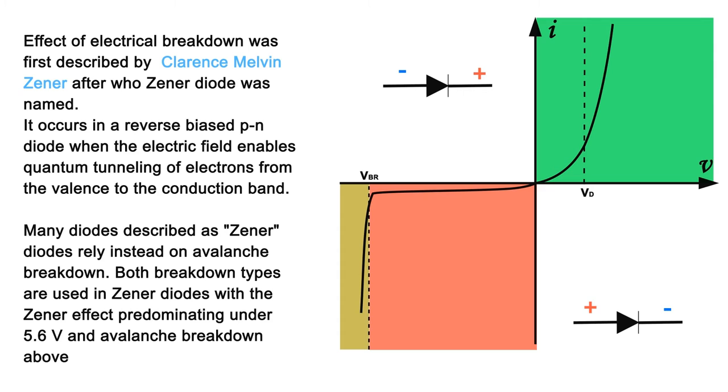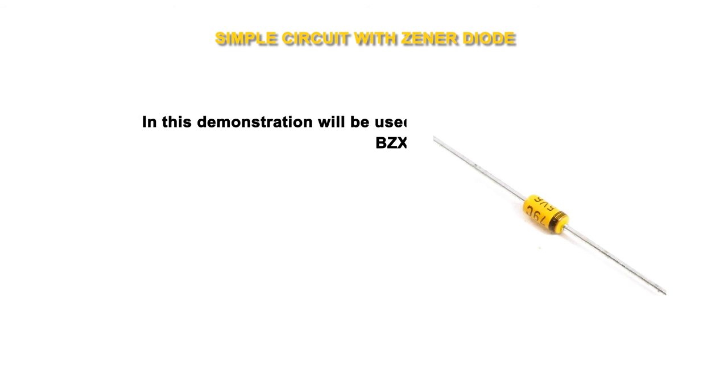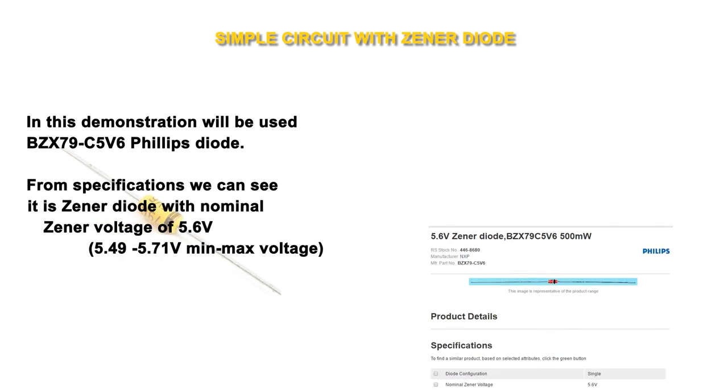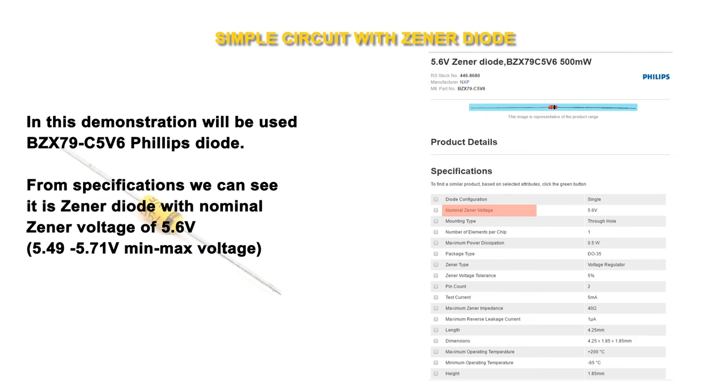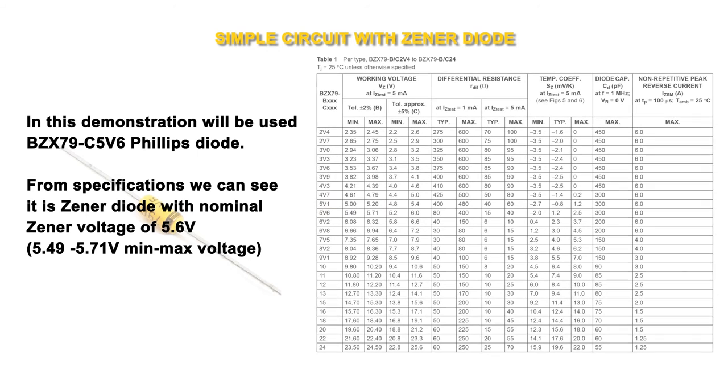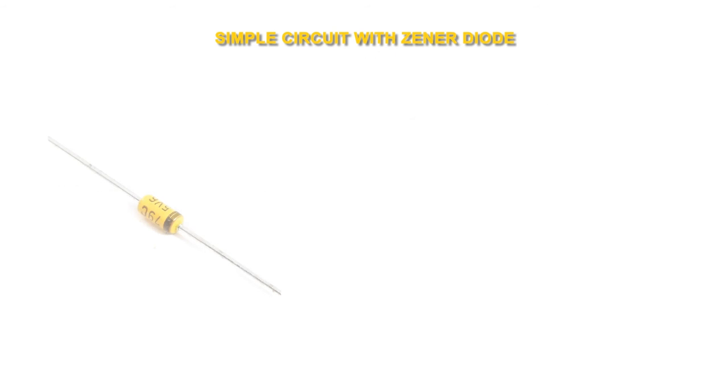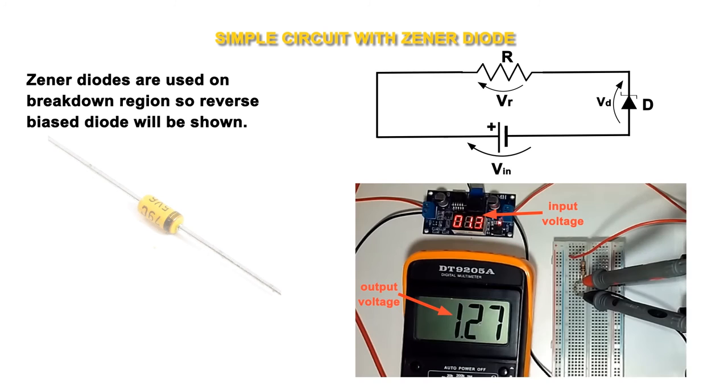Simple circuit with zener diode. In this demonstration will be used BZX79-C5V6 Phillips diode. From specifications we can see it is zener diode with nominal zener voltage of 5.6 volts, 5.49 to 5.71 volts min-max voltage. Zener diodes are used in breakdown region.